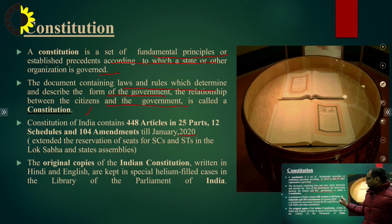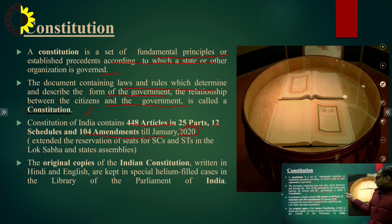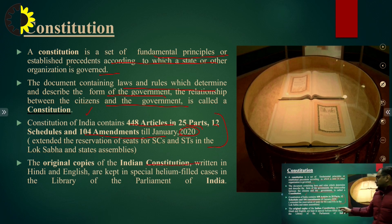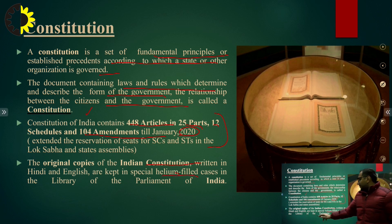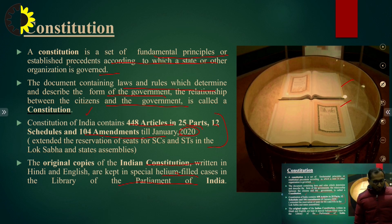As of January 22nd, the constitution contains 448 articles in 25 parts, 12 schedules, and 104 amendments. It is nothing but a set of books. The original copies of the Indian constitution are written in both Hindi and English and are kept in special helium-filled cases in the library of Parliament of India. The helium-filled case protects its pages from being tampered with or torn. The constitution was made between 1947 and 1950.